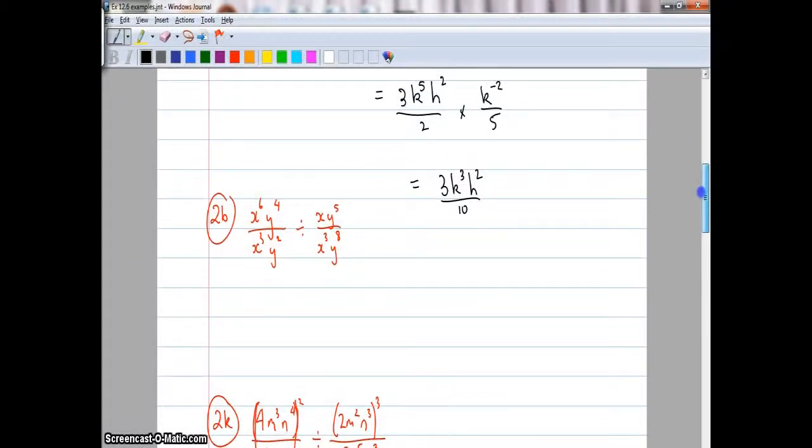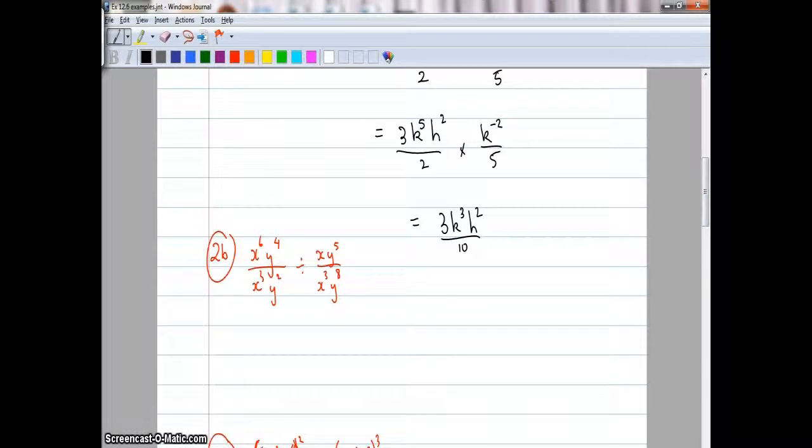I'll move on to question 2B now. The trick here with this next one is that I've got a divide sign, and I don't like to divide fractions, I only like to times them. So that one's going to be x6 y4 over x3 y2, multiplied, because I can flip and multiply fractions. That makes it x3 y8 over x y5. Now I can proceed to multiply them. Again, I like to check to see if there's any shortcuts I can take.